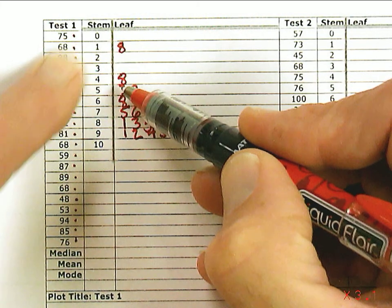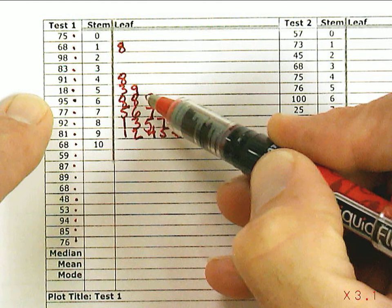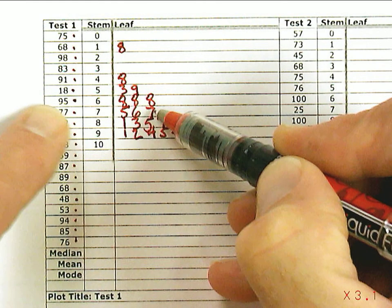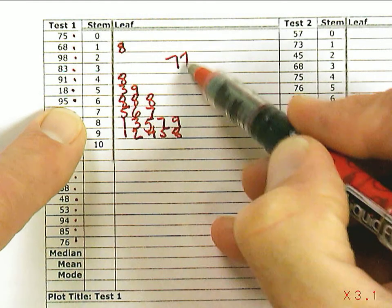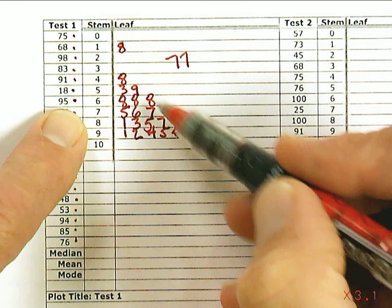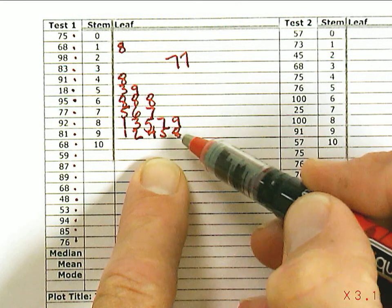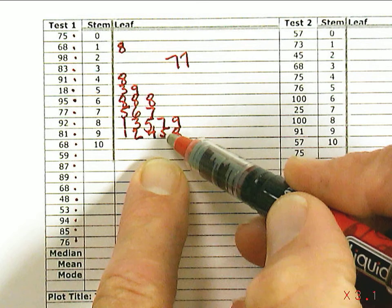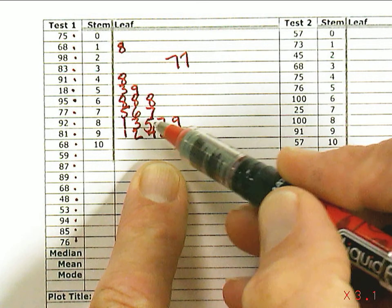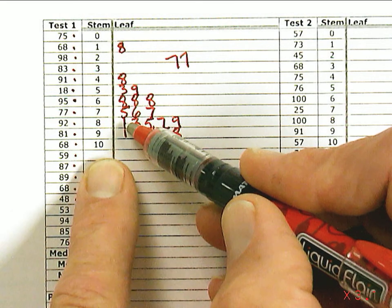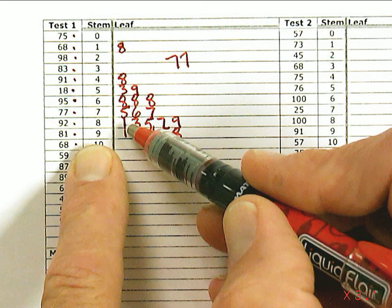10 off the top, 10 off the bottom. That will get me to the middle of the data set. So counting: 1, 2, 3, 4, 5, 6, 7, 8, 9, 10. So 77 is the tenth number from the bottom. From the top, counting 1, 2, 3, 4, 5, 6, 7, 8, 9, 10 numbers in from the bottom is 81.